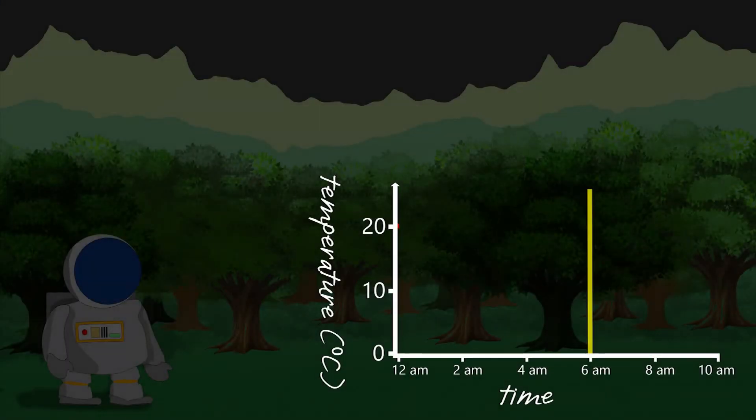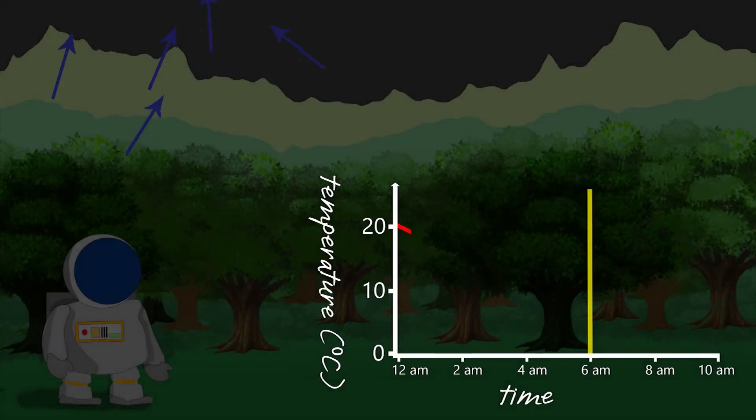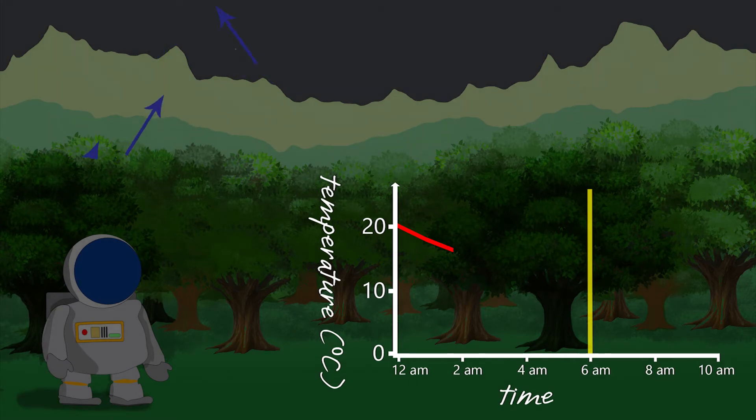So, during the night, our little part of Earth is receiving no solar radiation, but heat is being radiated away. As a result, the temperature drops, and we feel it getting colder.